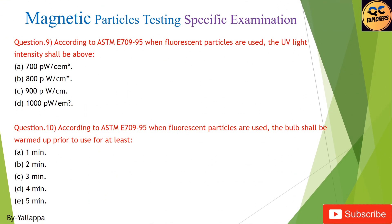Question 9: According to ASTM E709-95, when fluorescent particles are used, the UV light intensity shall be above: (A) 700 µW/cm²; (B) 800 µW/cm²; (C) 900 µW/cm²; (D) 1000 µW/cm².